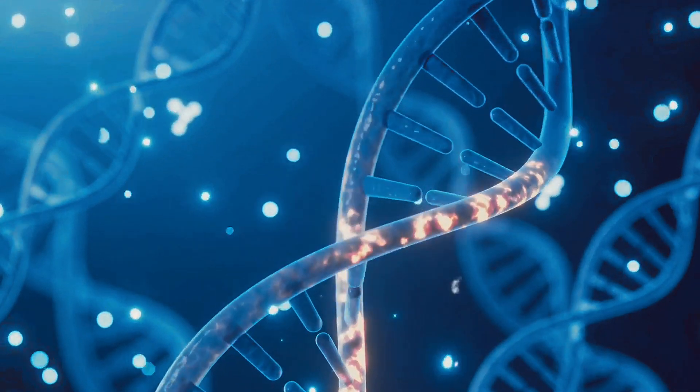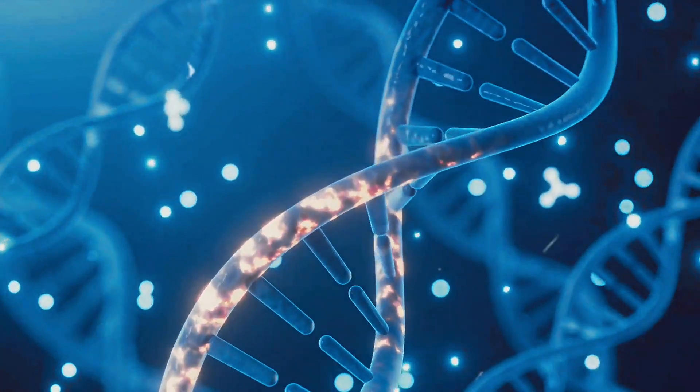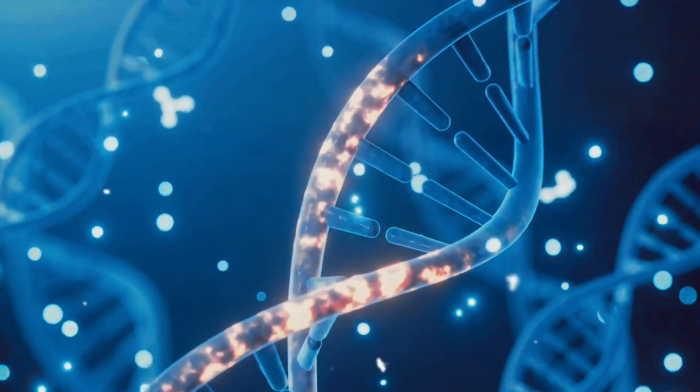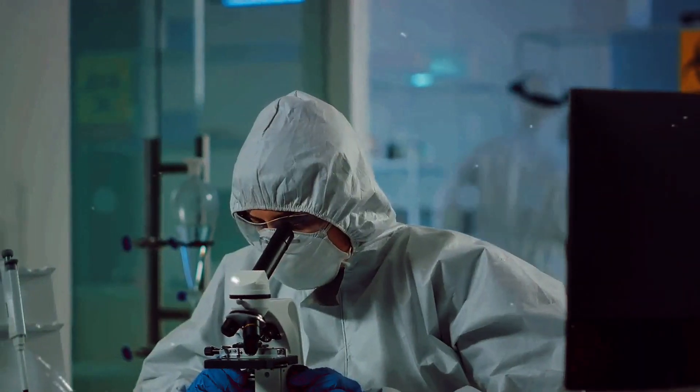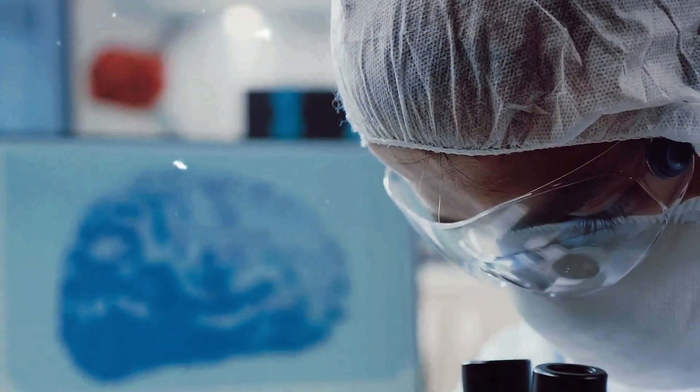The first step in the cloning process is the extraction of a somatic cell from the donor. This isn't any ordinary cell. A somatic cell is any cell in our body that's not involved in reproduction. That means it could be a skin cell, a muscle cell, or even a cell from your heart.